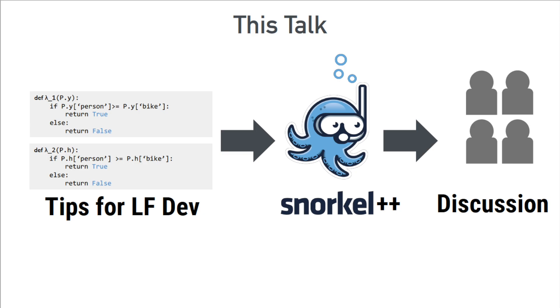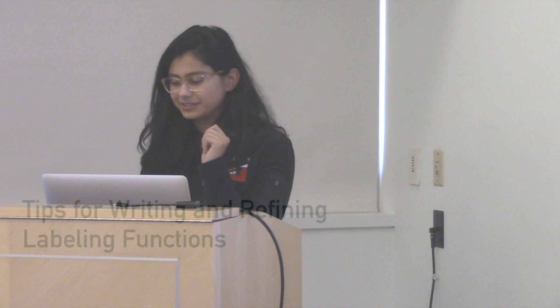In this talk, I'll go through tips for developing labeling functions, and then spend some time talking about other work we're doing in Chris's lab around weak supervision — specifically tools and algorithms that help you write more labeling functions and get more out of the ones you've already written in an automated fashion. I'd also love to hear what you think is important while writing labeling functions, as that might inspire our next project.